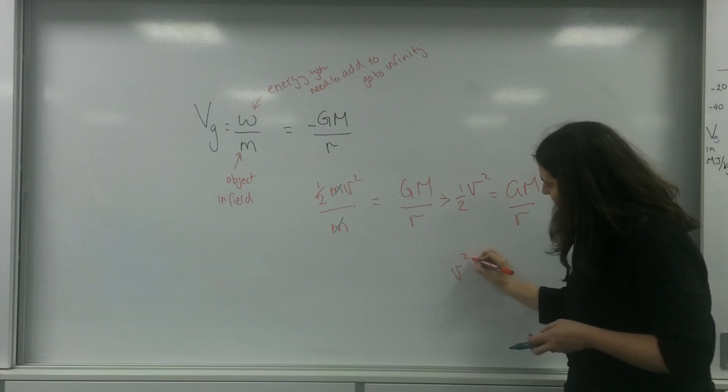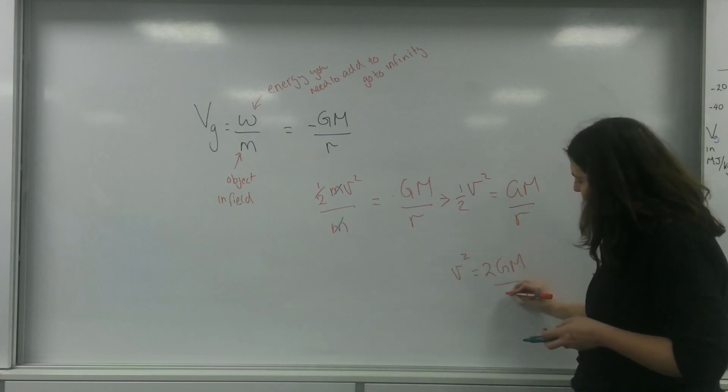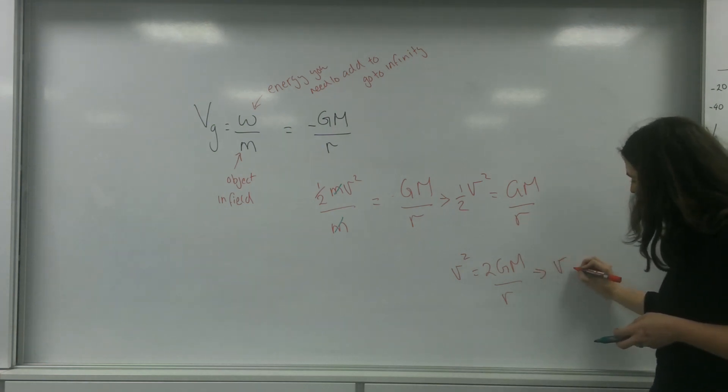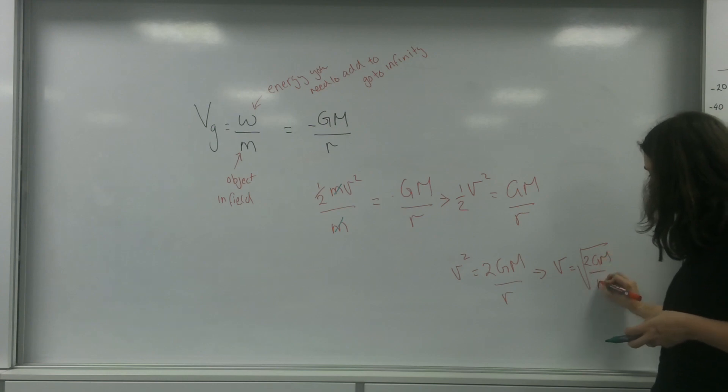V squared is 2GM over r, which means that v equals the square root of 2GM over r.